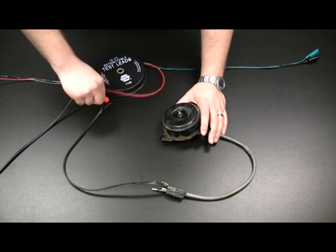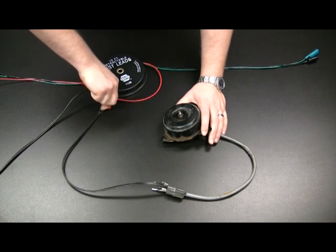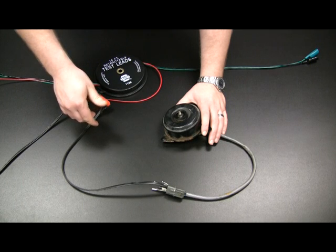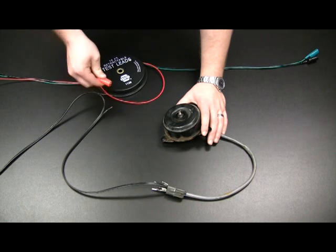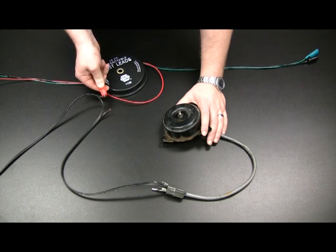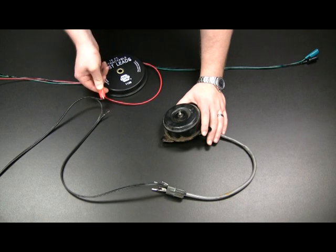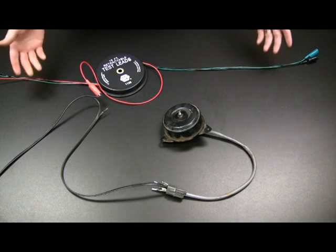Test the different contact areas along the circuit until the component no longer functions properly. The source of the issue is now located. In this example, the circuit is open at this specific location.